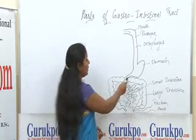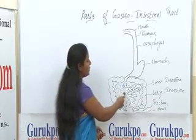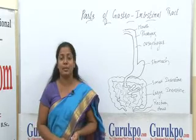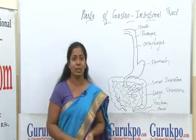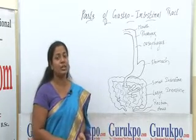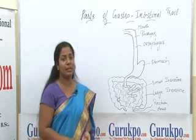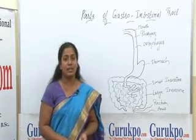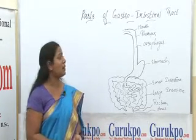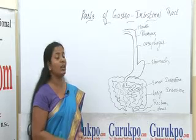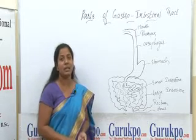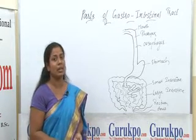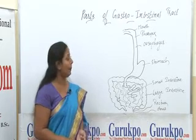Continuing from the stomach, it connects with the small intestine. The small intestine is divided into 3 parts: duodenum, jejunum, and ileum. The duodenum is the first part and food gets digested in the small intestine. Blood vessels then carry all the nutrients throughout the body.